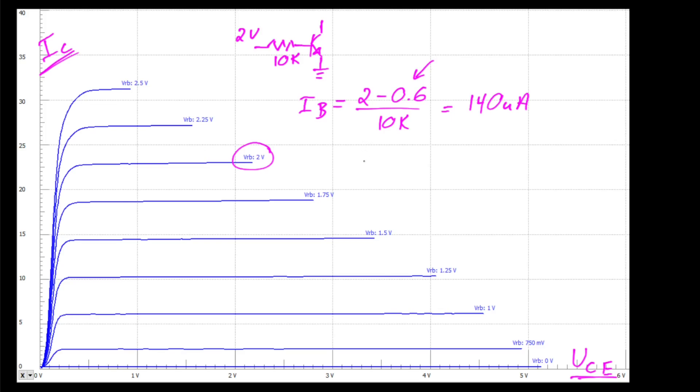Now for the heart of the video, we want to calculate the transistor beta, otherwise known as the DC current gain. And that is defined as collector current divided by base current of 23 milliamps. So that's collector current of 23 milliamps divided by a base current of 140 microamps yielding a beta that is approximately 164.